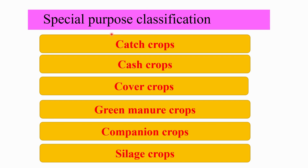Under special purpose classification, special purpose means the crop gives special advantages to farmers through farming practices. Catch crops are emergency crops — substitutes for failed crops under unfavorable conditions — that grow fast; examples are rye, millet, and clover. Cash crops are grown only for economic purpose and have short maturity. Cover crops are planted to provide cover to the soil to prevent soil erosion and maintain moisture content.